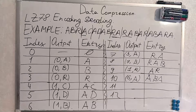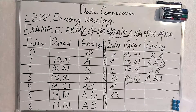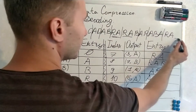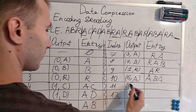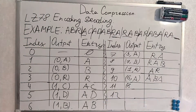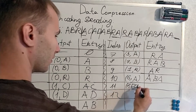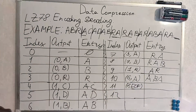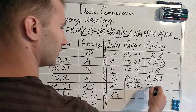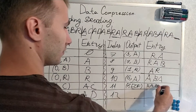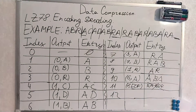And the last thing: it is 'ra' — we have 'ra', but here is end of file. Thus we encode 7, because 'ra' is 7, end of file. And that's it. A new entry would be 'ra' in the table, but actually it's not added because the encoding is over.